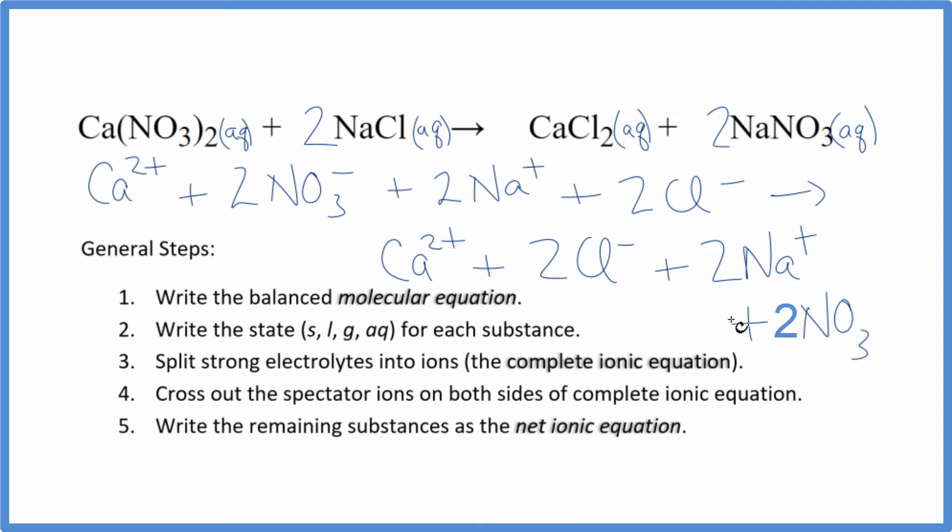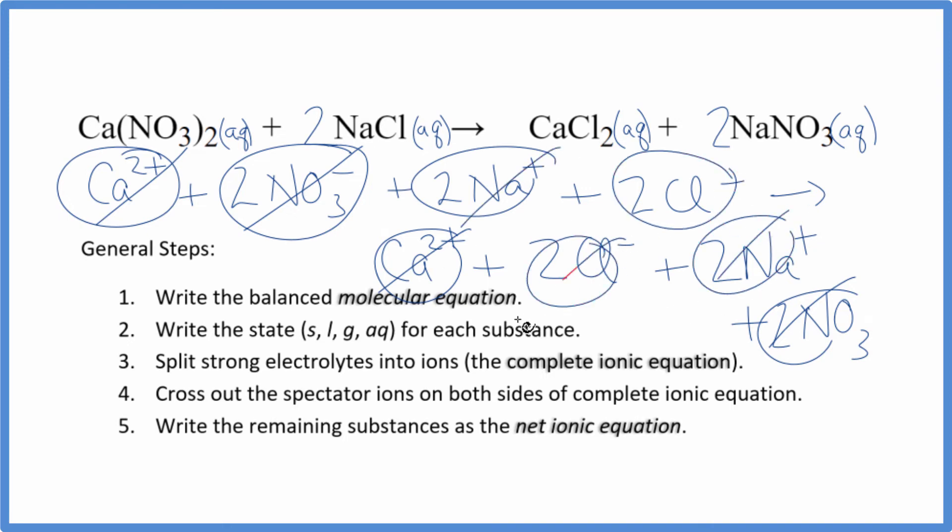We don't have any solids, liquids, or gases here. So now we could cross out spectator ions. They're on both sides. So the reactants and the products, calcium and calcium. Two nitrates here. Whoops. Two nitrates here. I should've put the two. It goes to everything. Those are on both sides. Two sodium ions and two chloride ions.